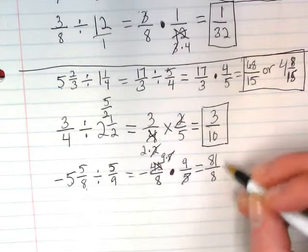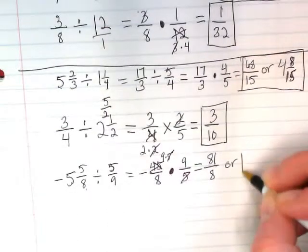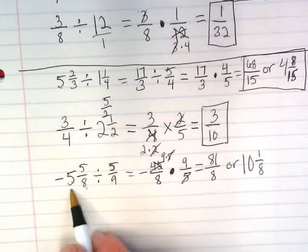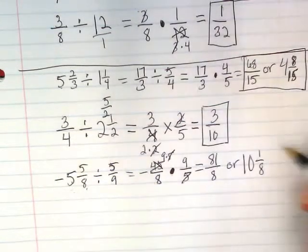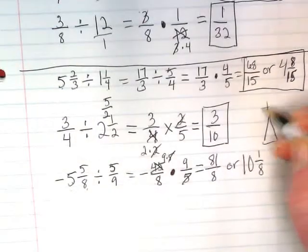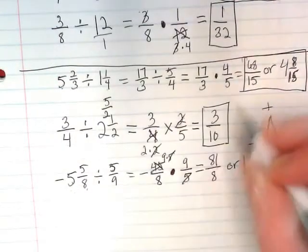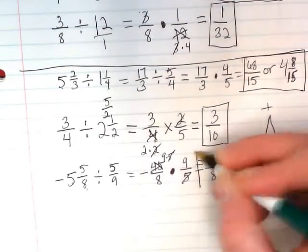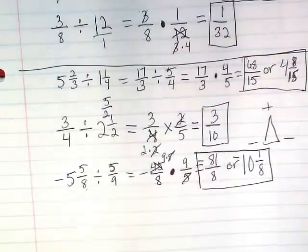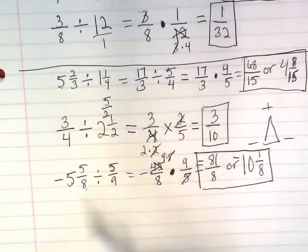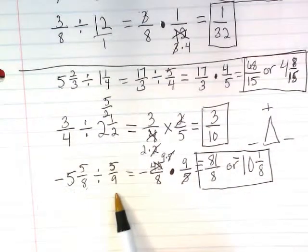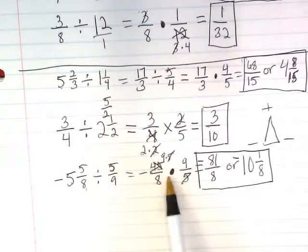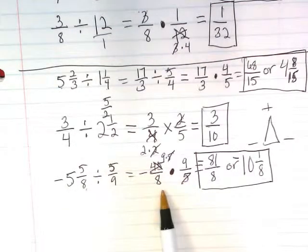9 times 9 then is 81 over 8. And I can leave it in that form. Or we can say it's 10 and 1 eighth. But we have to go back and remember this was negative, this was negative, so keep in mind that triangle. This is a negative, and this is a negative. So we have to keep that in there. Our answer would be negative because we started off with a negative divided by a positive. And when we do keep, change, flip, we still have a negative multiplied by a positive, negative, and those rules are still the same.